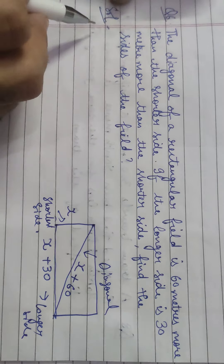Our next question is Question 6: The diagonal of a rectangular field is 60 meters more than the shortest side.